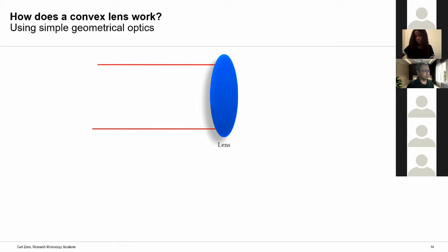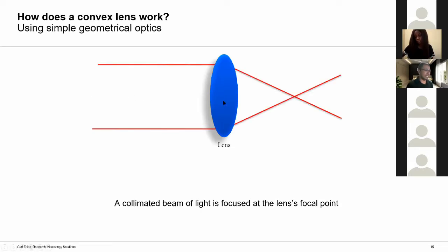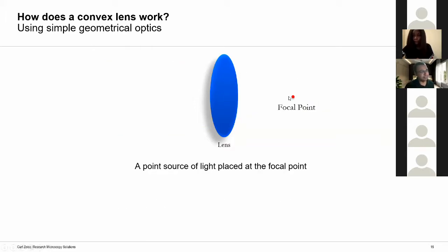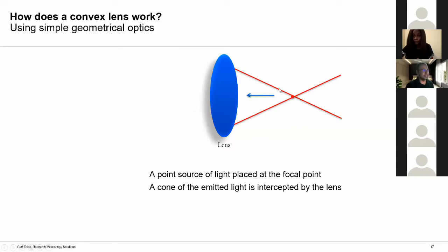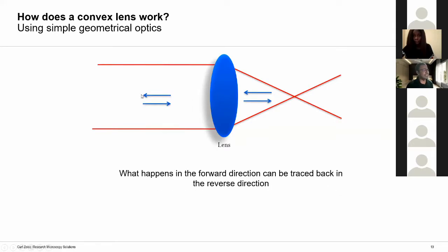Let's take a look at how a lens works. If I send a parallel beam of light into a lens, the light gets focused at a point called the focal point, and the distance between the focal point and the lens is called the focal length. Similarly, if I have a point source of light kept at the focal point, light is radiated isotropically in all directions. A cone of light is intercepted by the lens and the light will come out collimated. So you can trace the light forward and in the backward direction with a simple biconvex lens.